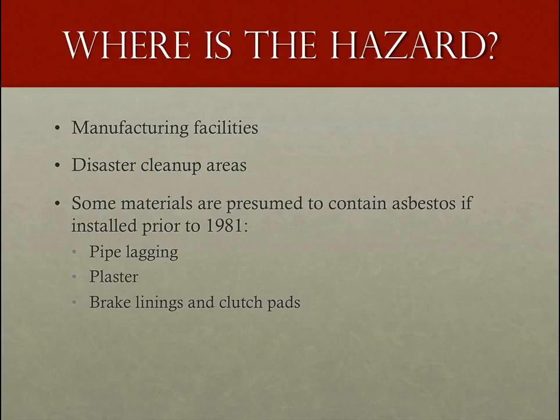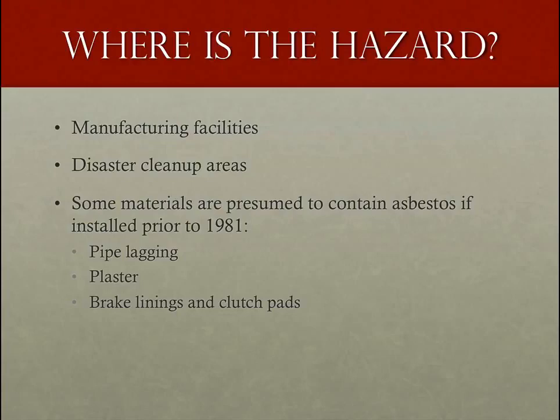Some materials are presumed to contain asbestos if installed prior to 1981. Examples of presumed asbestos-containing materials include thermal system insulation, roofing and siding shingles, vinyl floor tiles, plaster, cement, putties and caulk, ceiling tiles and spray-on coatings, industrial pipe wrapping or pipe lagging, heat-resistant textiles, and automobile brake linings and clutch pads.